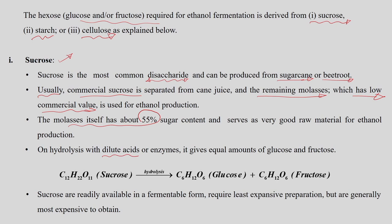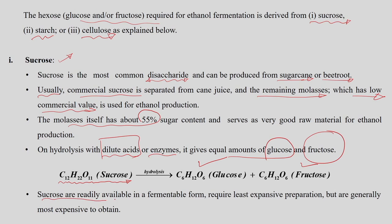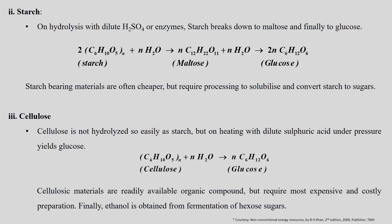On hydrolysis of sucrose using dilute acid or enzyme, it gives equal amounts of glucose and fructose molecules. The structure of sucrose undergoes hydrolysis to produce glucose and fructose. Sucrose is readily available in fermentable form and requires least expensive preparation, but is generally the most expensive to obtain.